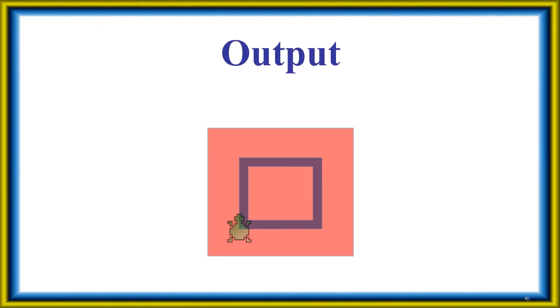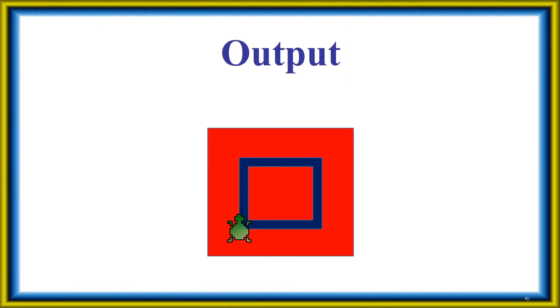Let's see the output. The canvas color is red, the pen color is blue, and we can get the rectangle using these commands.